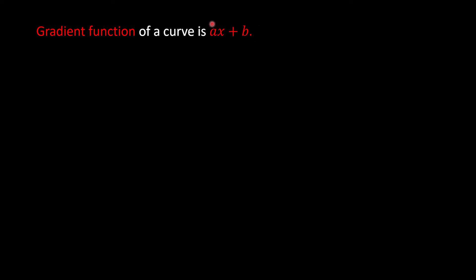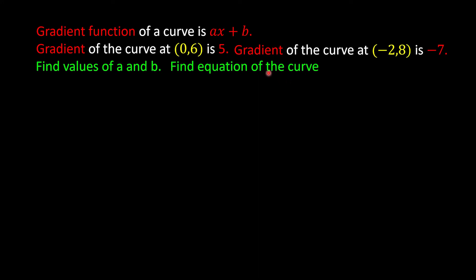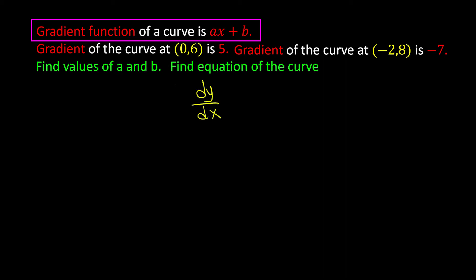Let's look at another example. The gradient function of a curve is ax plus b. They say the gradient of the curve at point (0, 6) is 5, and the gradient at x equals negative 2 is negative 7. We need to find the values of a and b, then find the equation of the curve. We can write dy over dx equals ax plus b, but everything is in terms of unknowns. We'll substitute the given gradient information and use simultaneous equations to find a and b.